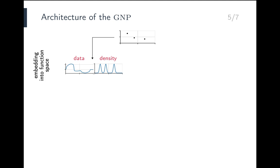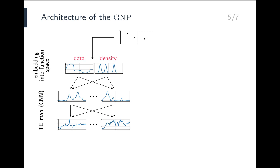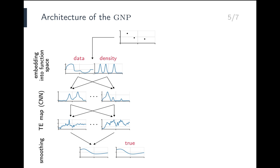In the next step, this functional representation is transformed by a translation equivariant map, implemented in practice with a multi-layer convolutional neural network using 1D convolutions. The ellipses indicate that the CNN has multiple channels. Finally, the output of the CNN is combined to produce the model's estimate of the mean function. Comparing this estimate to the true mean function, there's almost no visual difference, which means that the GNP does a good job.